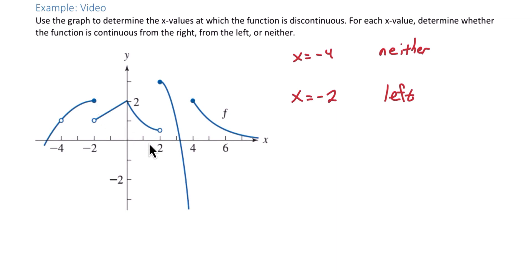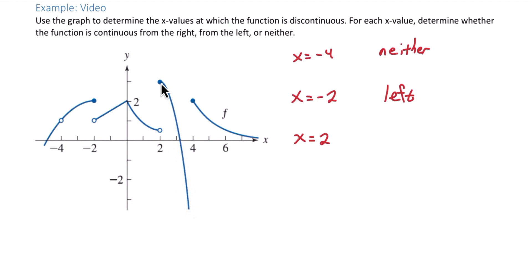Our next discontinuity occurs at an x value of 2. As you approach 2 from the left, the limit is roughly one half, but f of 2 is 3, so it's not continuous from the left. As you approach 2 from the right, we get a value of 3, and f of 2 is 3, so it is continuous from the right.